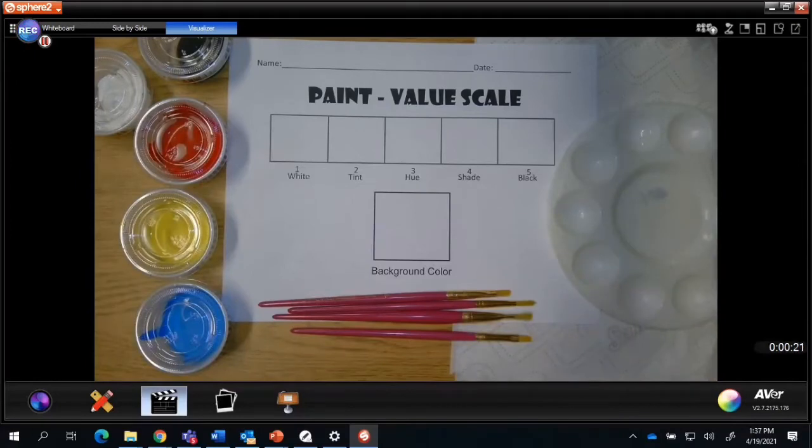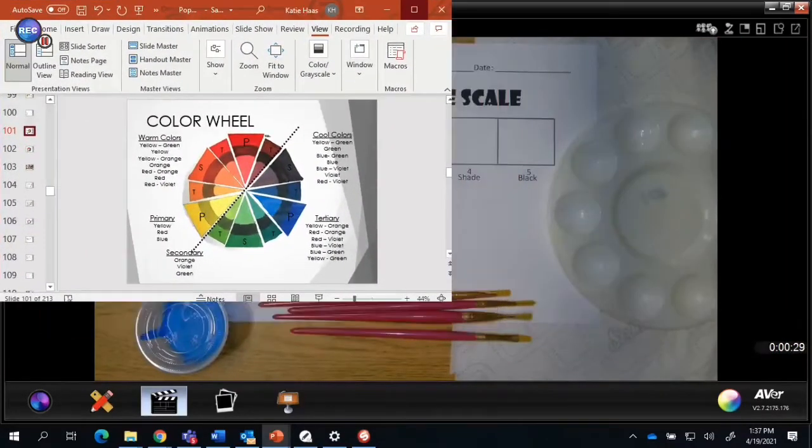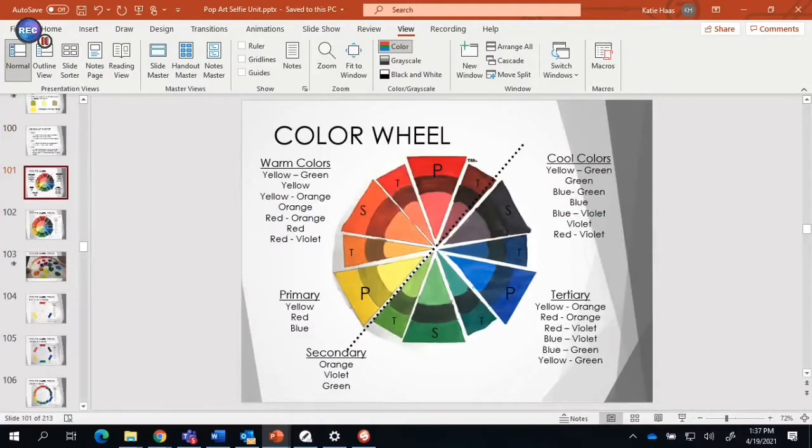First thing you need to do is decide what kind of colors you want to use for your portrait. Try to think about what feeling or mood you're trying to express through your portrait. Look at your color wheel and choose a color that will express what you're trying to convey. Choose a color for your face or the actual portrait, and then choose some sort of color scheme to go along with that color for your background.